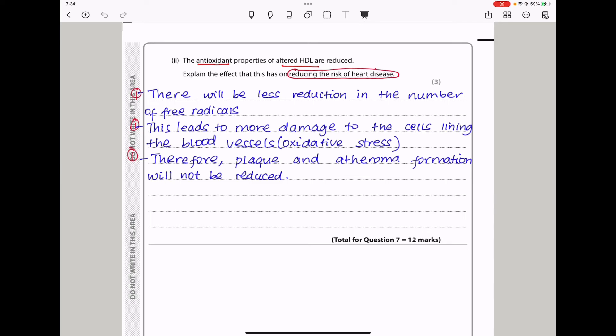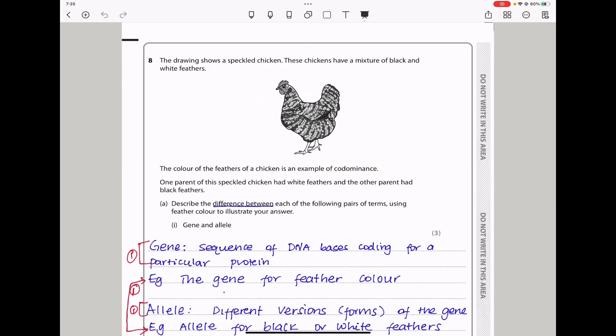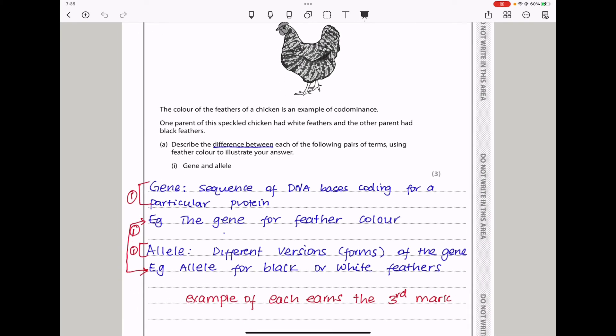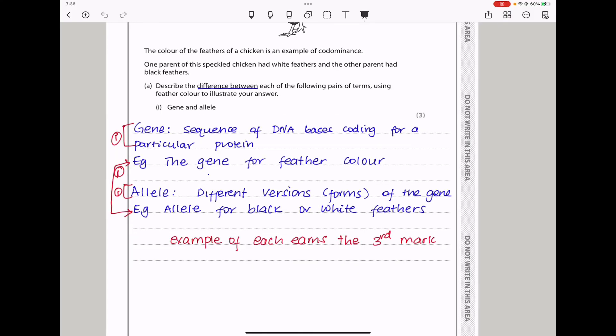Let's continue to question 8. These chickens have a mixture of black and white feathers. The color of the feathers is an example of co-dominance. One parent of this speckled chicken had white feathers, and the other parent had black feathers. Describe the difference between each of the following pairs of terms, using feather color to illustrate your answer. First is gene and allele. Gene, this is a sequence of DNA bases coding for a particular protein. In this example, it is the gene coding for feather color. Allele, these are different versions or forms of the same gene. Here we can see the allele for black and the other for white feathers.